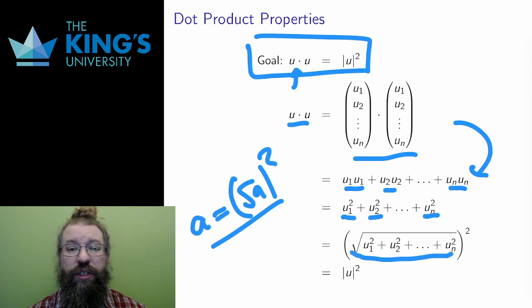The square root of the sums of the squares is the definition of length. And the expression is, therefore, length squared. And I've ended up with the desired result.